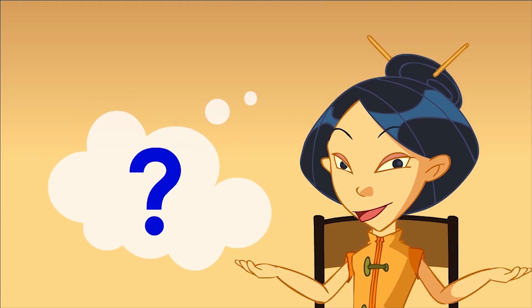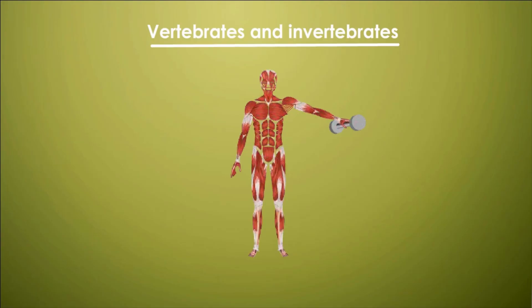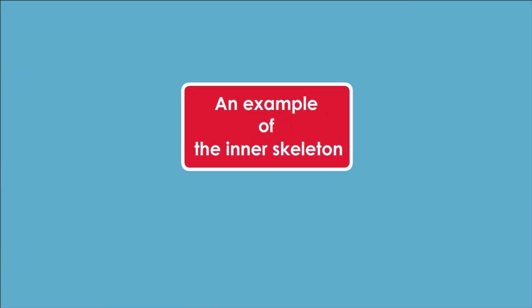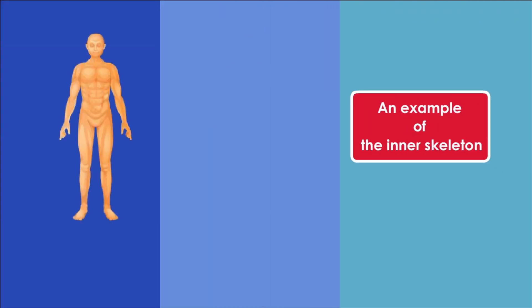But are all skeletons the same? What's the difference? Some skeletons are inside the body while others are outside. An example of the inner skeleton or endoskeleton is that of vertebrates, like human beings, which comprises inner bones.